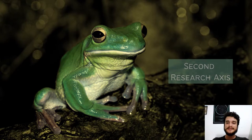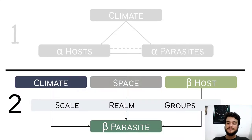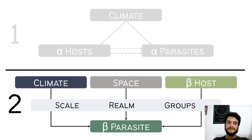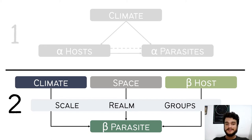The second research axis was focused on parasite beta diversity. We were trying to understand how the relative effects of climate, space, and host beta diversity as drivers of parasite beta diversity vary between scales, between realms, and between both host and parasite groups.